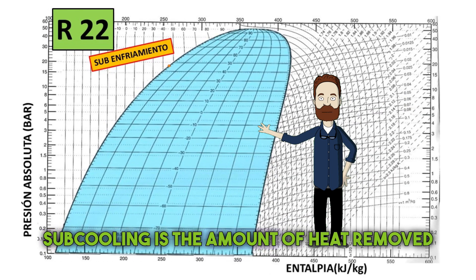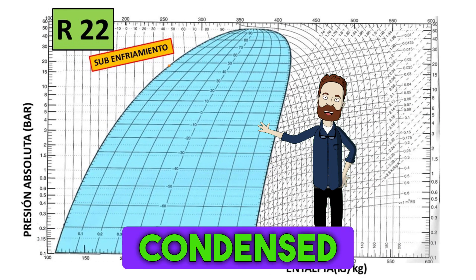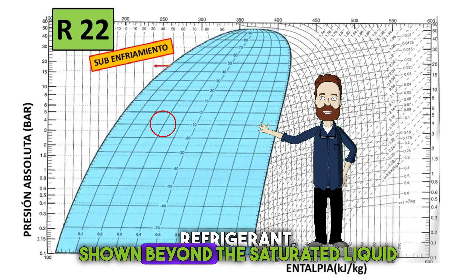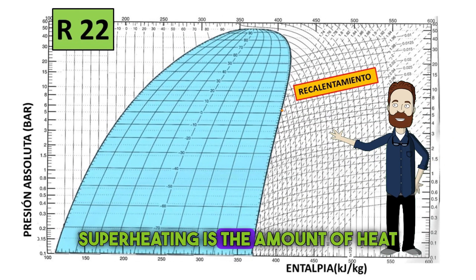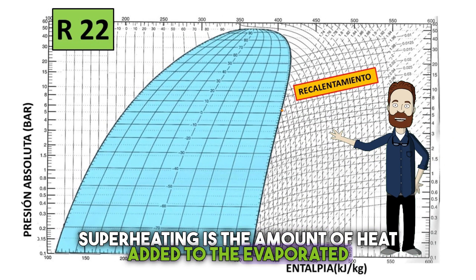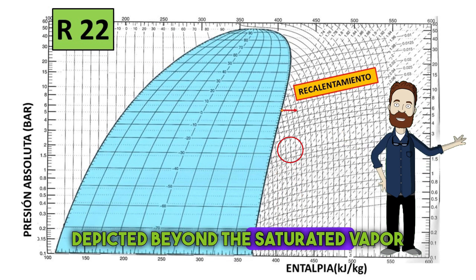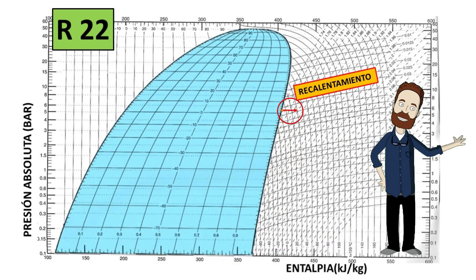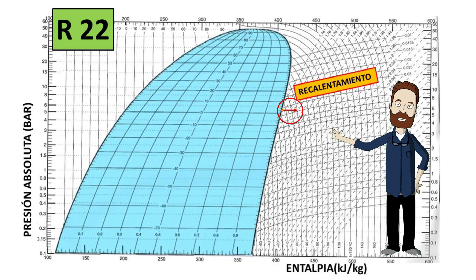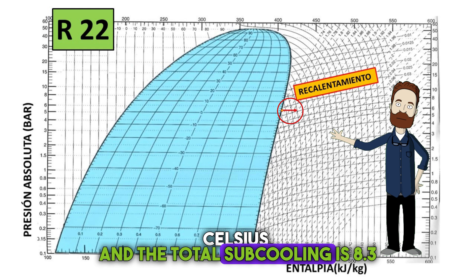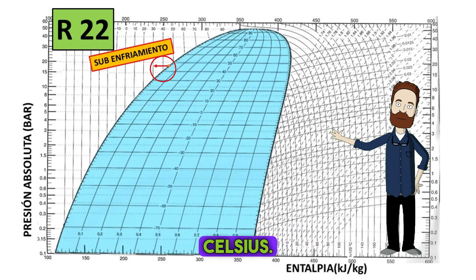Subcooling is the amount of heat removed from the already condensed refrigerant, shown beyond the saturated liquid line. Superheating is the amount of heat added to the evaporated gas, depicted beyond the saturated vapor line. In our example, the total superheat is 11.1 degrees Celsius, and the total subcooling is 8.3 degrees Celsius.